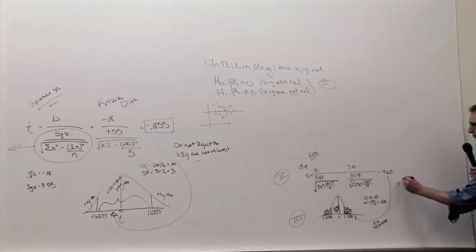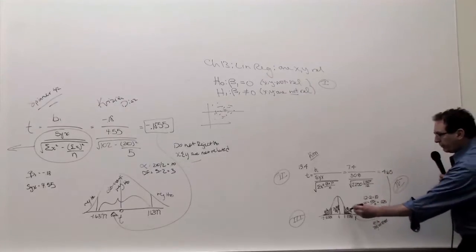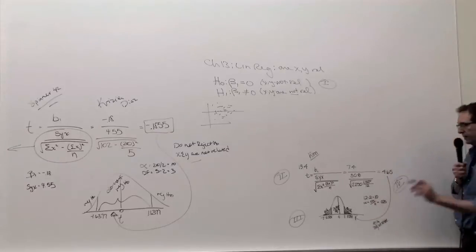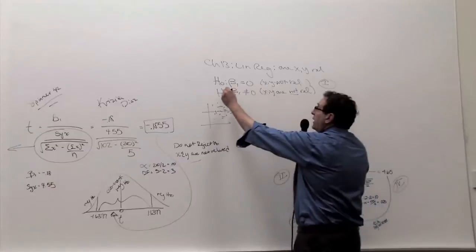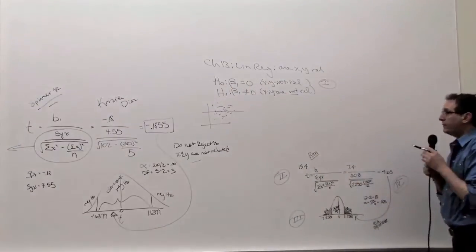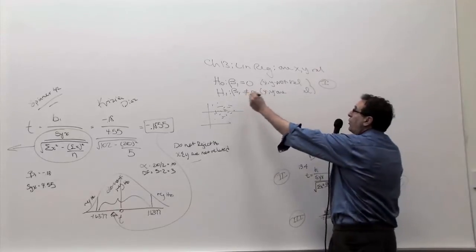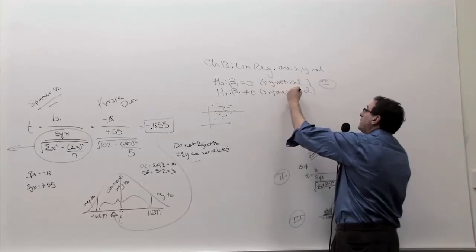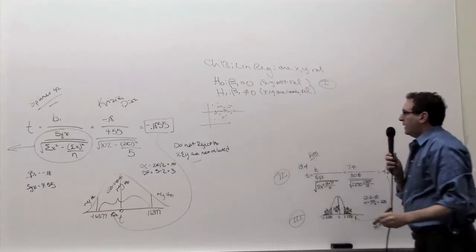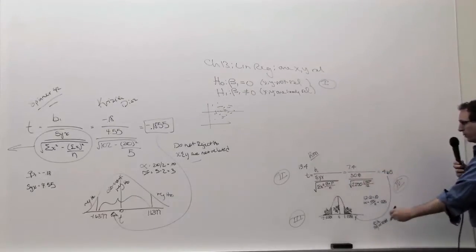And finally, step number four is to make an arrow relating this number to the boundary. In this case, clearly it's in the reject region, which Kim very nicely labeled reject H0. And since we rejected H0, we believe the H1, which is beta one not equals zero, x and y are linearly related.